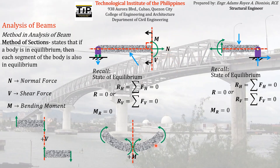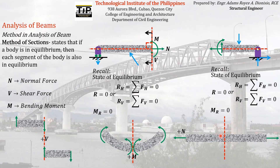Lastly, for normal force: a positive normal force tends to elongate the beam — similar to tension in a truss. On the other hand, a negative normal force tends to shorten the beam — it compresses it. That is what a positive and negative normal force does to a beam at a cross-section.